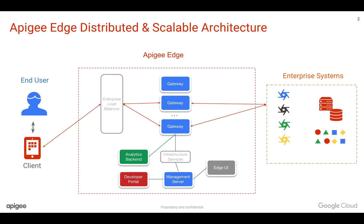You can scale each of these components infinitely and horizontally. If you see more load on your APIs, you just add one more API gateway. When you add a new gateway, all the API proxies deployed will be automatically replicated in near real-time and the new gateway will start taking API traffic. Not only gateways — you can also deploy analytics machines in multiple redundant fashion so that there is no single point of failure even for analytics.